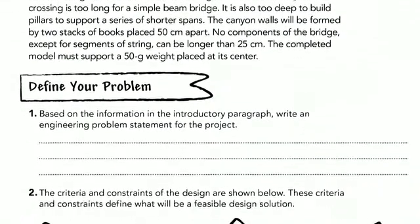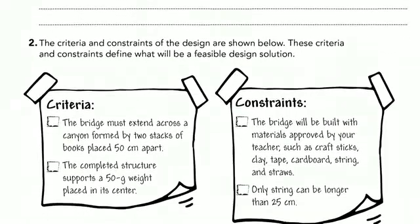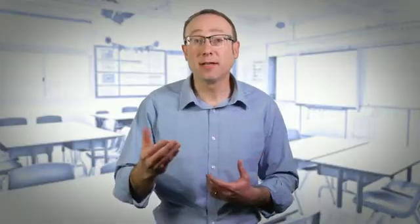Students choose the procedure that establishes how they will investigate their own problem or a question that has been provided. They design a data collection or recording method, choose a real-world engineering problem to solve, and choose materials to solve a design problem. Students then design numerous solutions, choose the optimal solution, and test, redesign, and retest a solution.